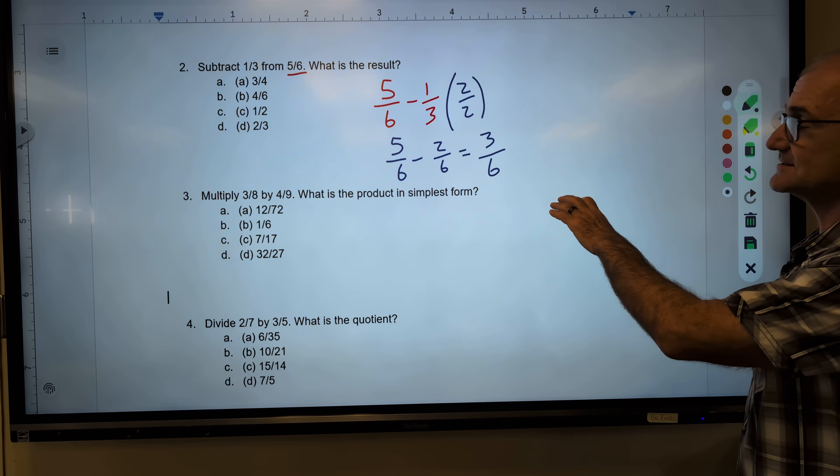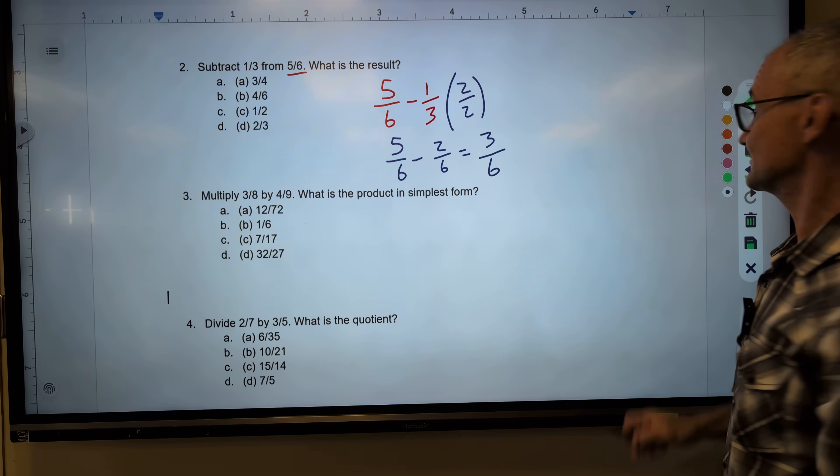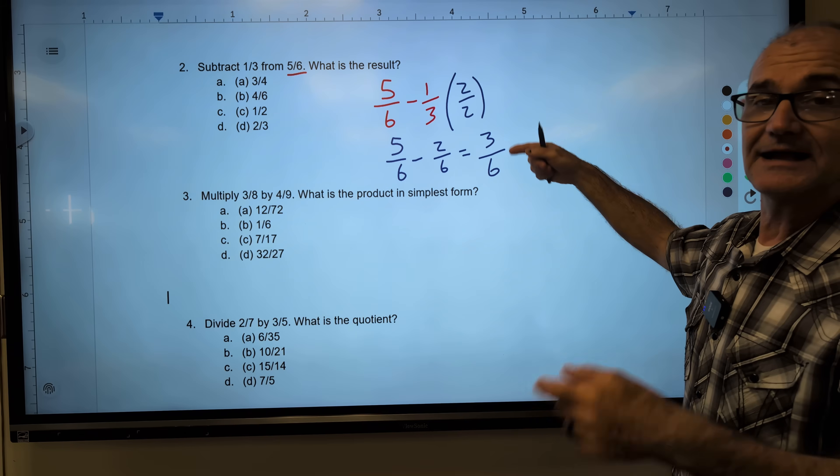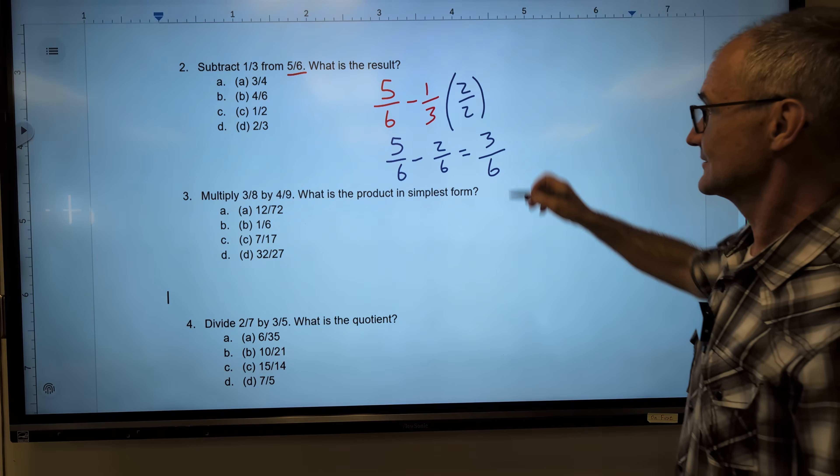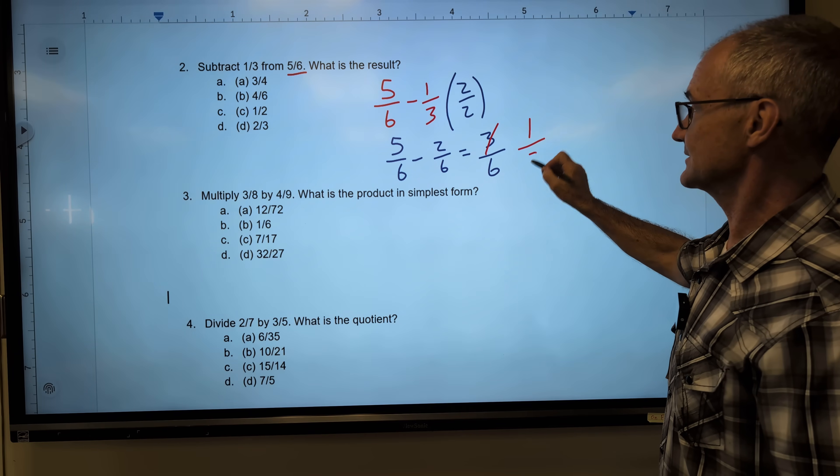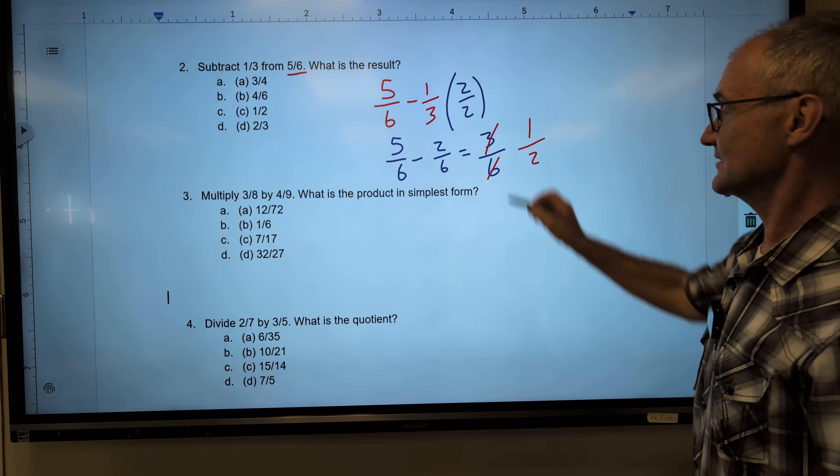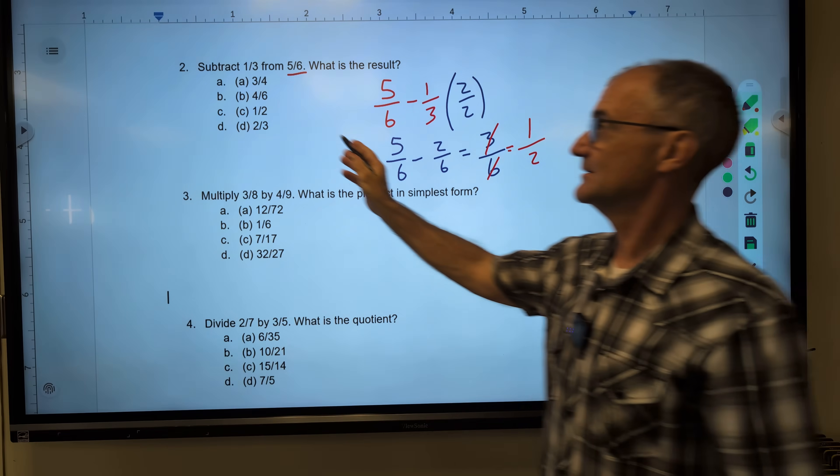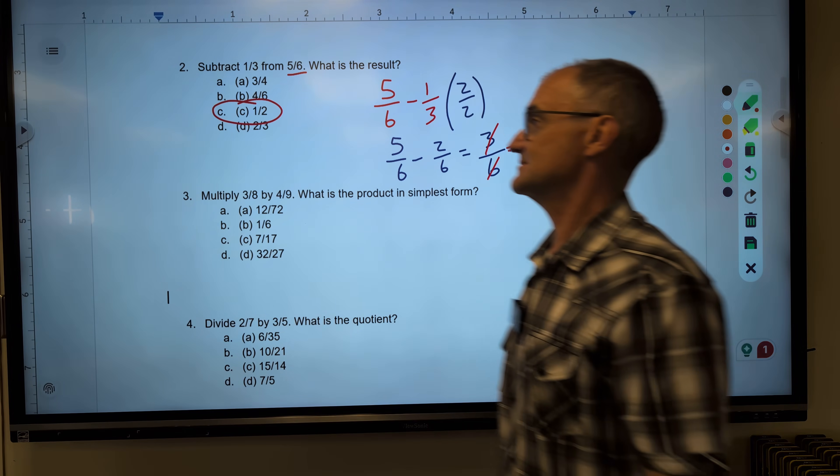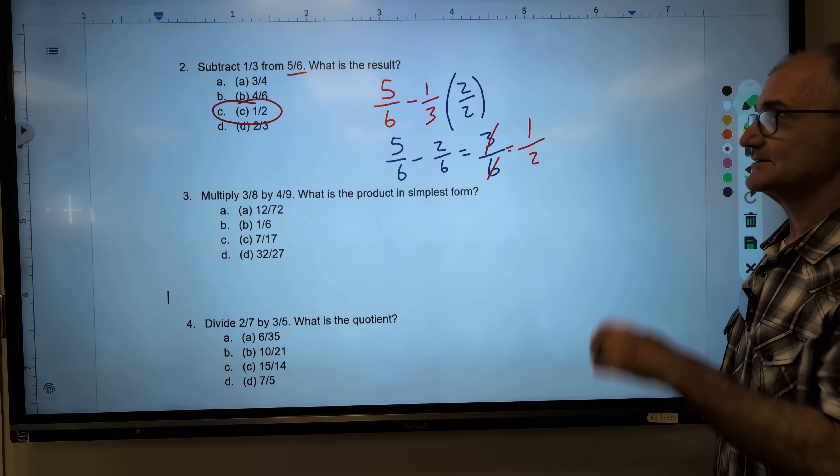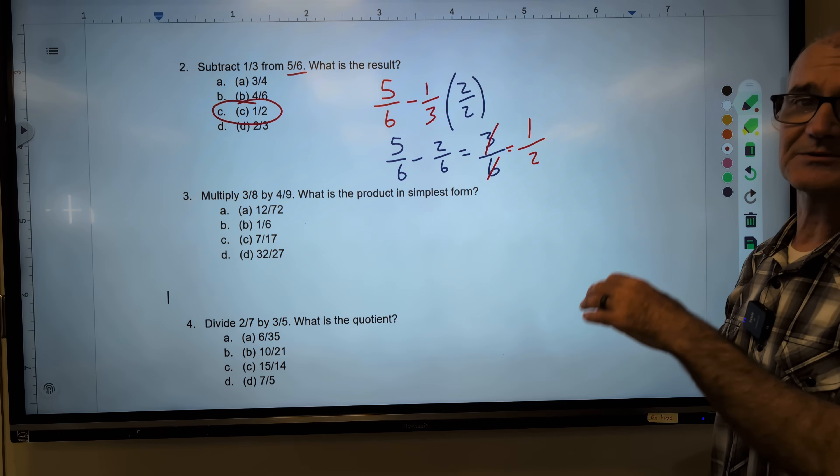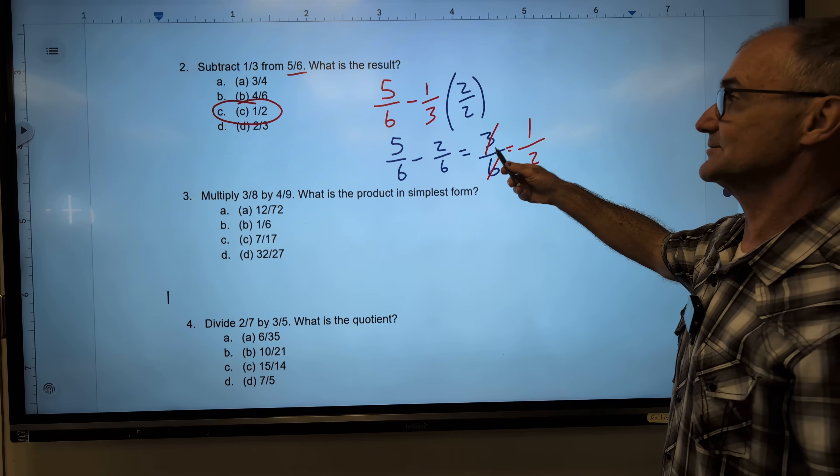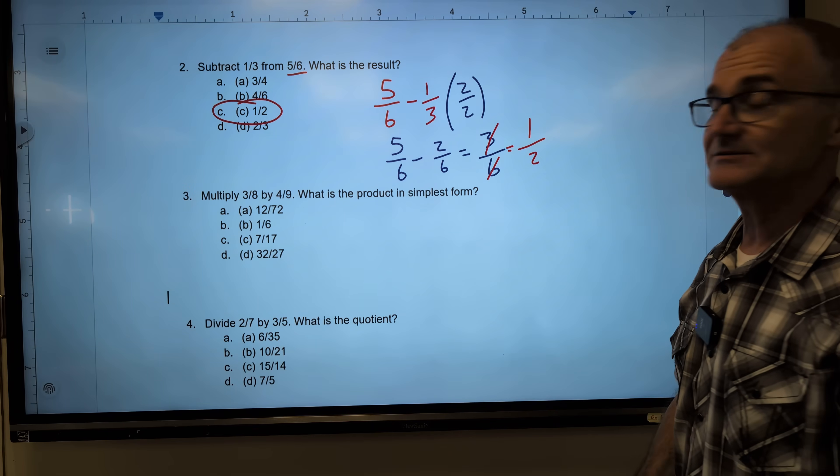That's the correct answer. However, I have to reduce it. I'm looking for a number that will go into three and a number that will go into six. Well, three will go into here one time. Three will go into here twice. So three-sixths is correct, but it is reduced to one-half. Correct answer, answer C right here. You can see why it's so important to have your multiplication tables perfectly dialed, because you're looking for multiples here, multiples here. You're doing that a lot.